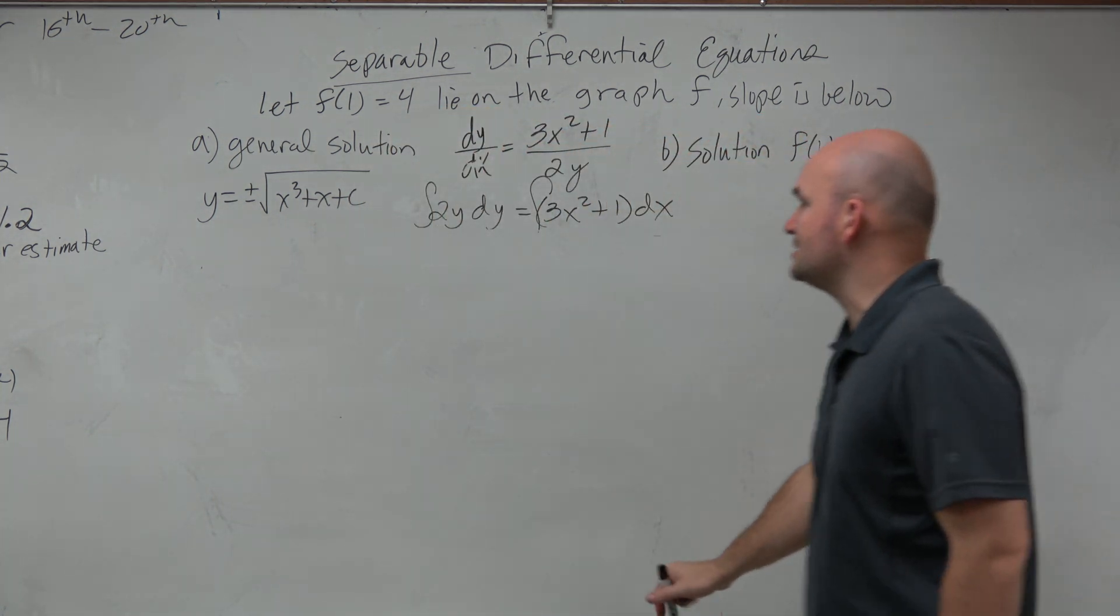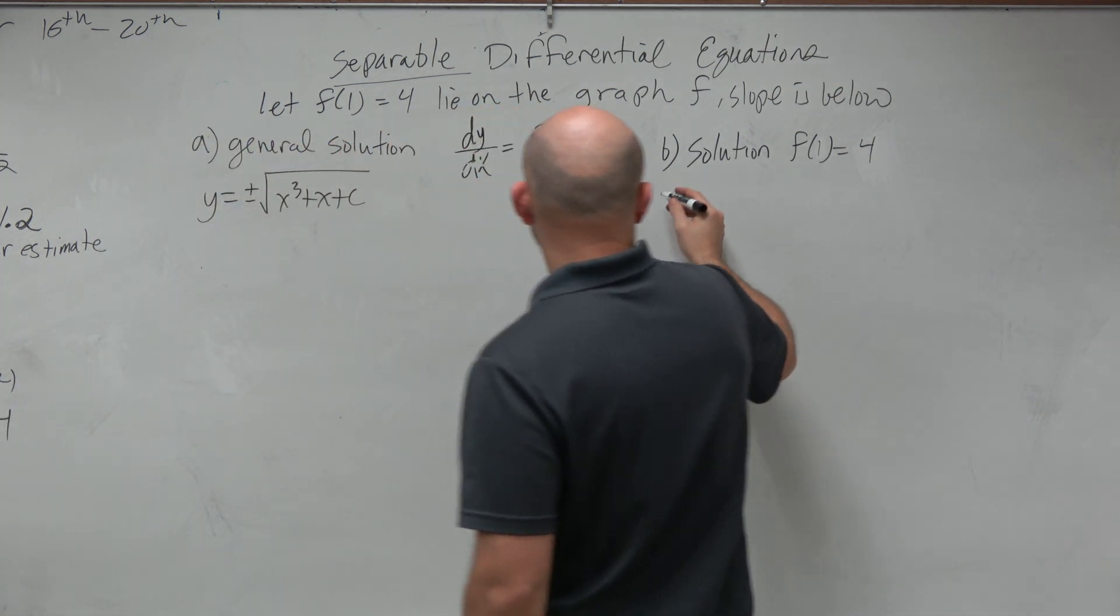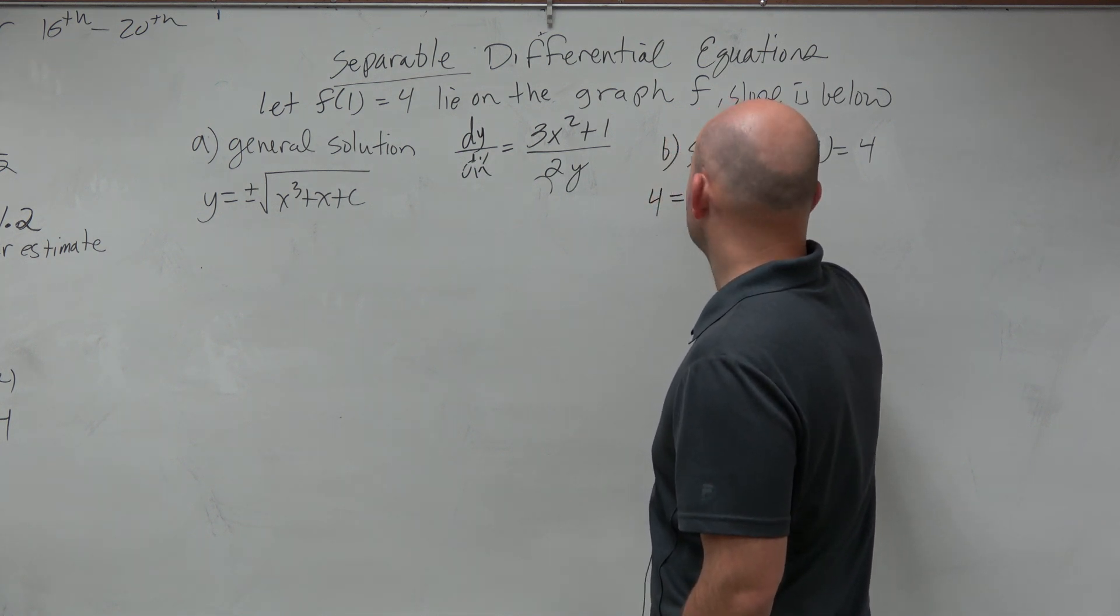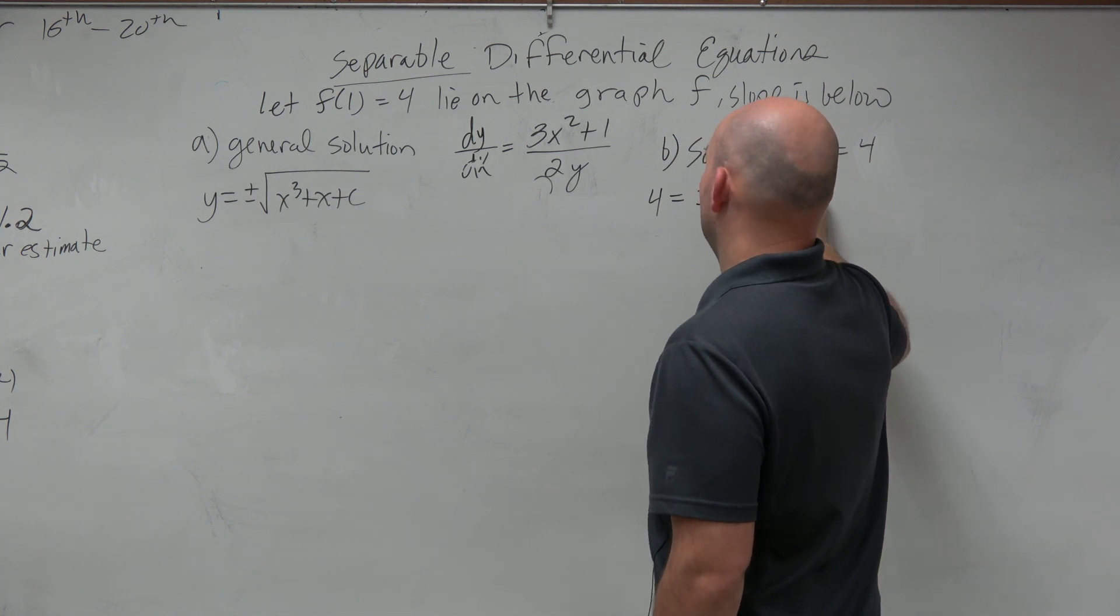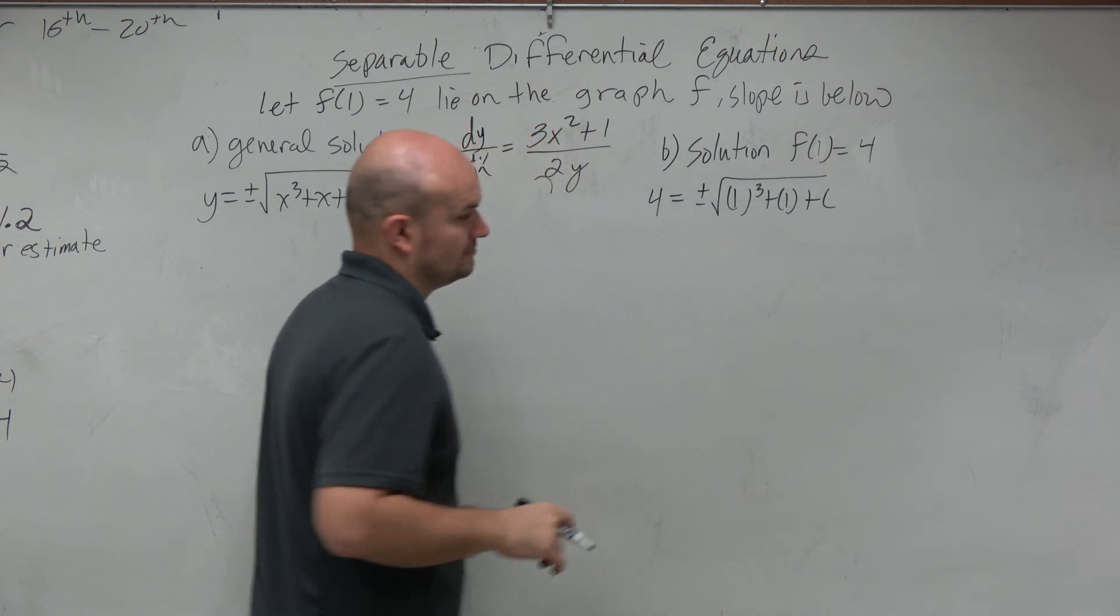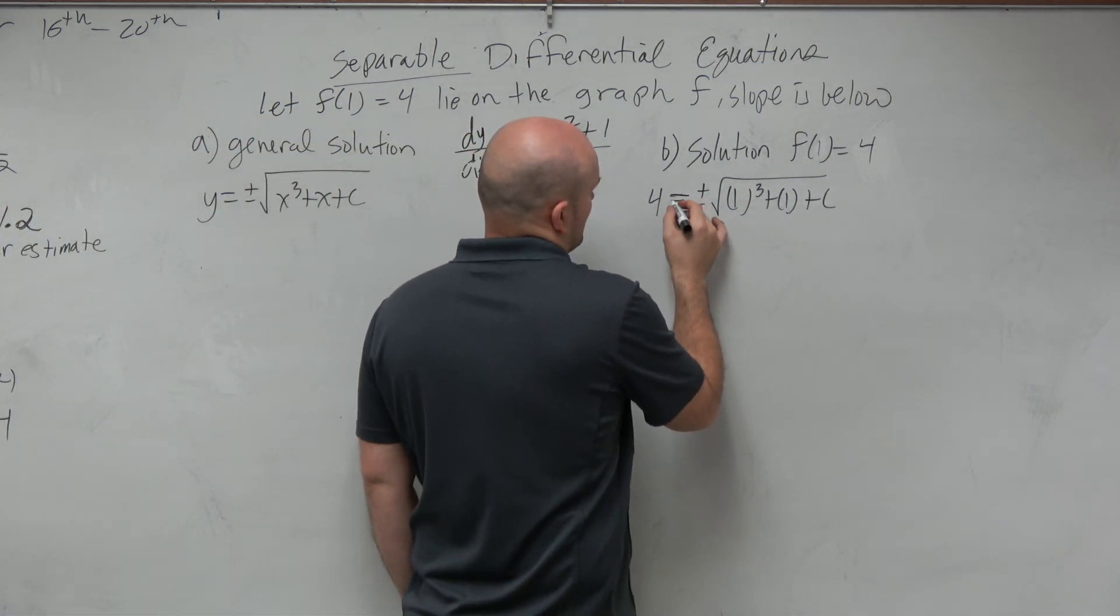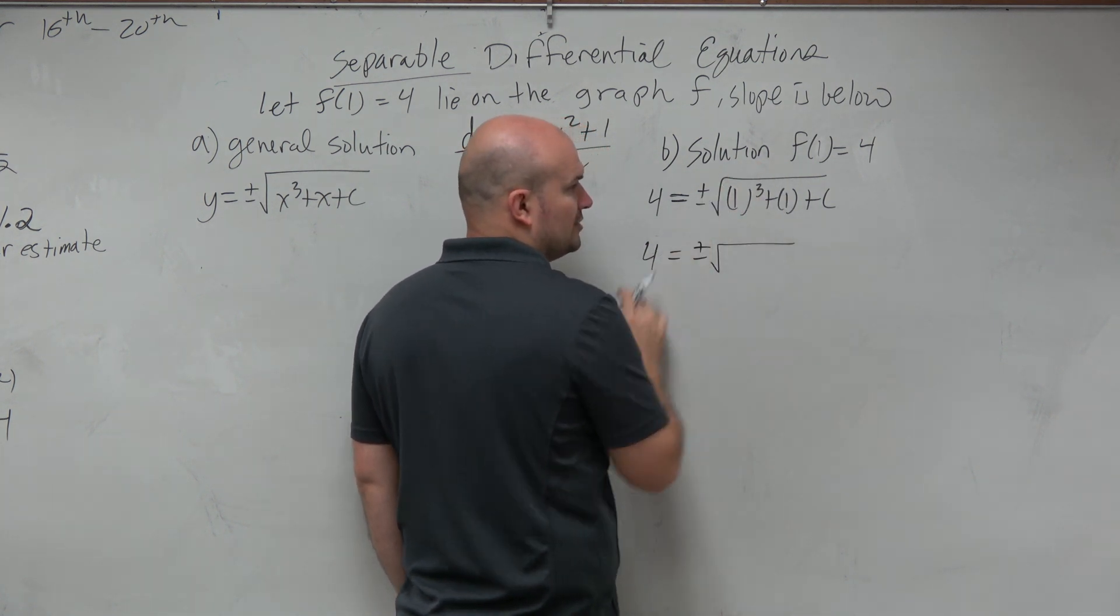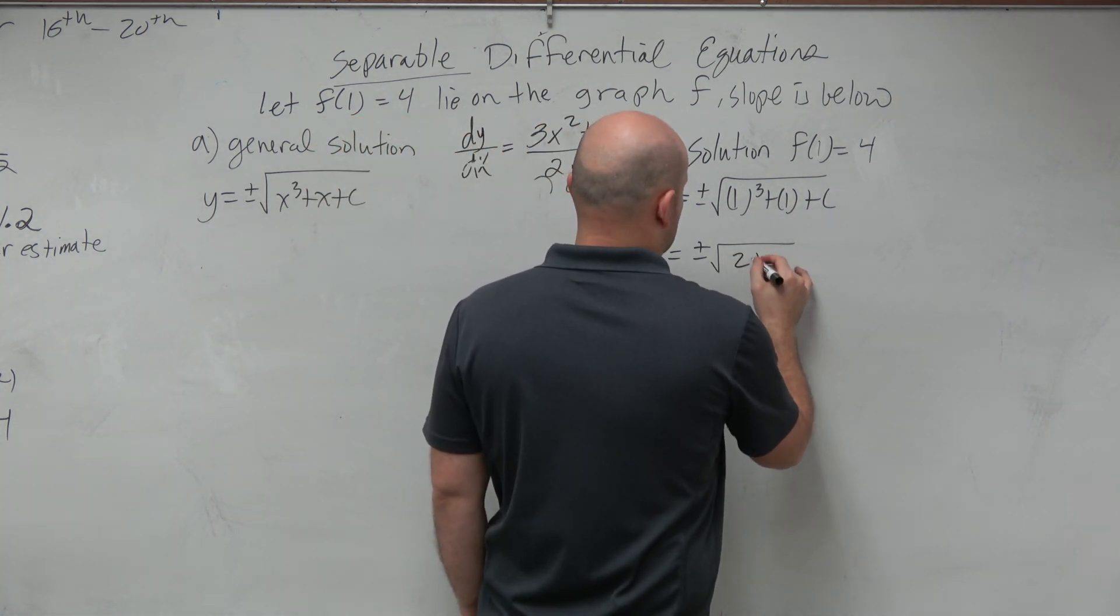All right. So now, let's go ahead and find the solution. So in this case, I'm going to have, just plug in my value. So I'm going to have 4 equals plus or minus square root of 1 cubed plus 1 plus c. So I have 4 equals plus or minus the square root. 1 cubed is 1 plus 1 is 2. So I get 2 plus c.